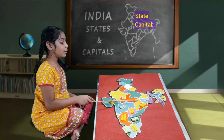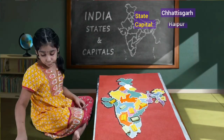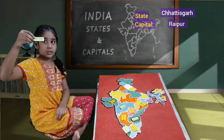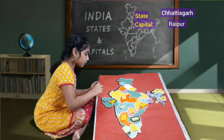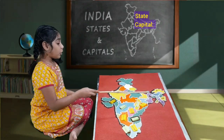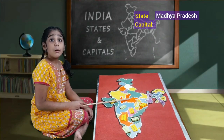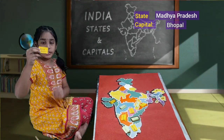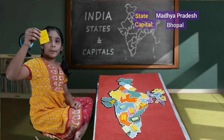Beside Odisha, we'll have Chhattisgarh. Chhattisgarh's capital is Raipur. This is Chhattisgarh. And if we open the chat, Raipur will be there as capital. In the middle of India, we'll have Madhya Pradesh. Madhya Pradesh's capital is Bhopal. This is Madhya Pradesh. If we open the chat, we'll have Bhopal as capital.